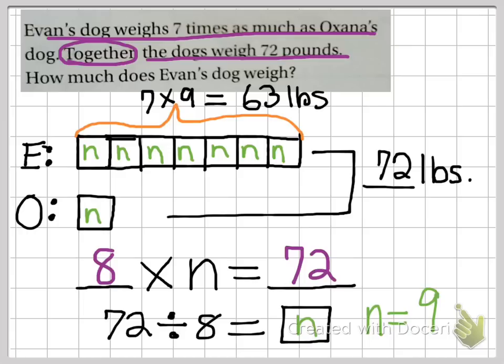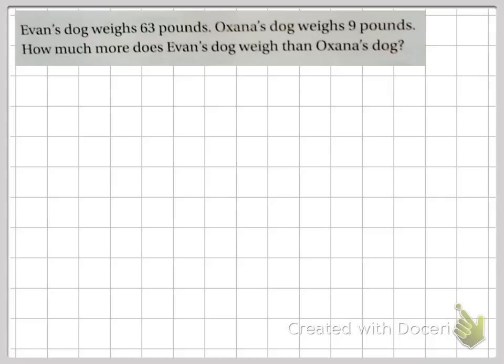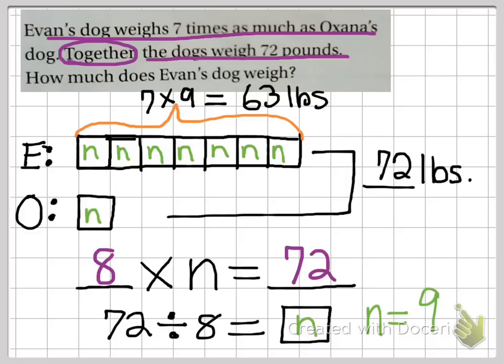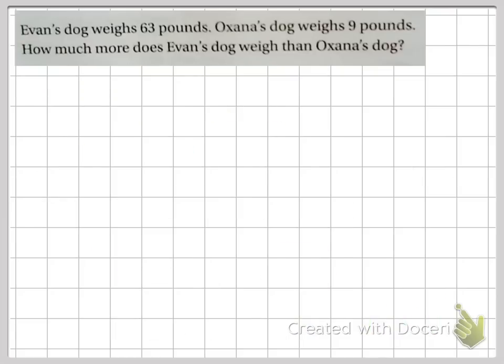Let's take a look at another one. Evan again. Now we know Evan's dog weighs 63 pounds. Ohana's dog weighs nine pounds, which, if we look back, yes, that's true, because Ohana's dog is only one copy of N, and N is equivalent to nine pounds. How much more does Evan's dog weigh than Ohana's dog?